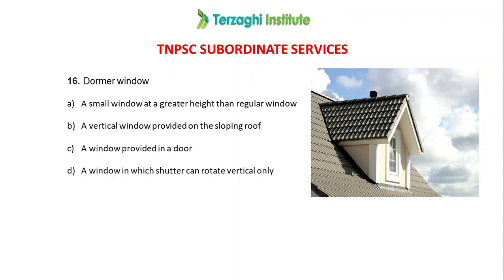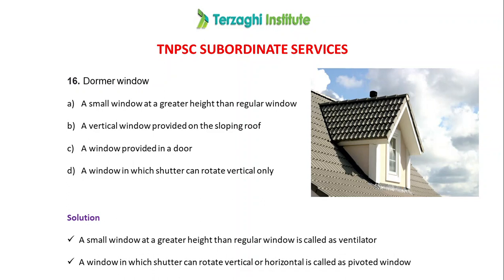Next question: dormer window. There are 4 options — a small window at a greater height that regulates wind; a vertical window provided under a sloping roof; a window provided in a door; and a window in which the shutter can rotate both vertically and horizontally, called a pivot window. A dormer window is a vertical window provided under a sloping roof. The answer is Option B.